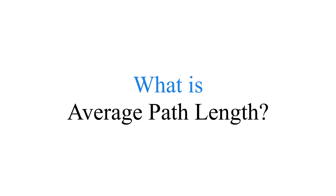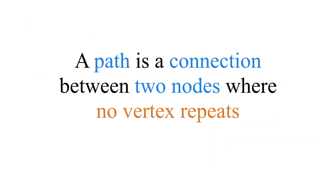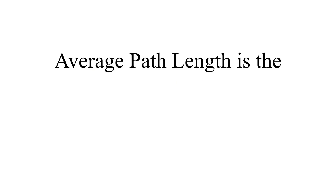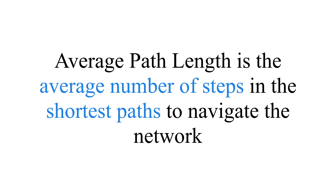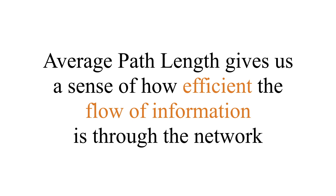We're going to talk about each one of those. Starting with average path length — first, what's a path? Imagine you're a vertex and you want to traverse the entire network. A path is a closed loop where no vertex repeats and no edge repeats. Average path length is the average number of shortest paths to get around that network, giving us a sense of how efficiently information is moving through it.